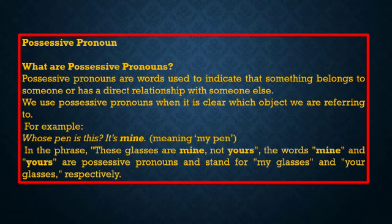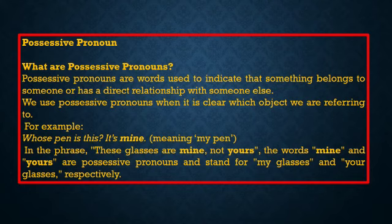Now let us see what possessive pronouns are. Possessive pronouns are words used to indicate that something belongs to someone or has a direct relationship with someone else. We use possessive pronouns when it is clear which object we are referring to. For example: 'Whose pen is this?' — 'It's mine.' The object we are referring to is 'pen,' so 'mine' means 'my pen.'